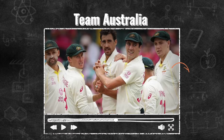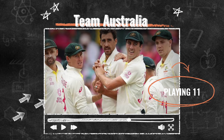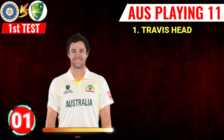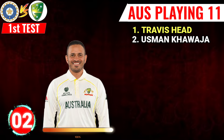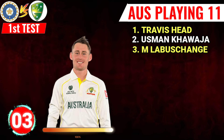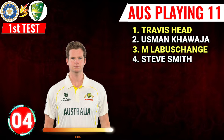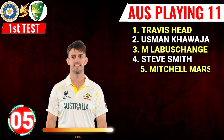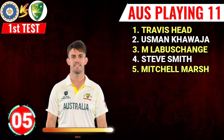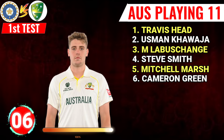Team Australia final playing 11. Number 1: Travis Head, left hand batter. Number 2: Usman Khwaja, left hand batter. Number 3: Manas Labushanj, right hand batter. Number 4: Steve Smith, right hand batter. Number 5: Mitchell Mars, right hand all-rounder.